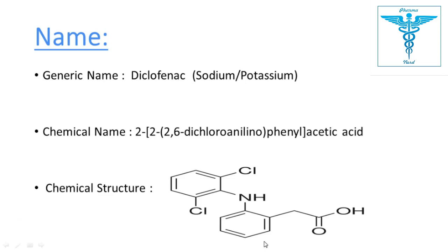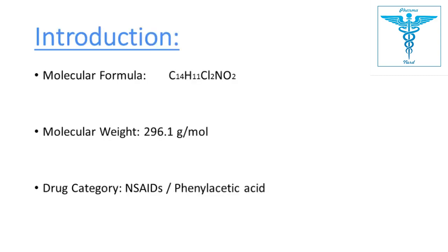This is the chemical structure of Diclofenac. If this is Diclofenac Acid, and on the OH group there is Sodium attached, then this will be Diclofenac Sodium. If there is Potassium attached, it will be Diclofenac Potassium. If there is a Dimethyl Ammonium Salt attached, it will be Diclofenac Sodium Dimethyl Ammonium Salt. Formula: C14H11Cl2NO2.